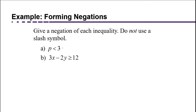It helps to think about what numbers make the statement true. For example, 1 is less than 3 — true. 2 is less than 3 — true. In logic, we abbreviate true with just the letter T.